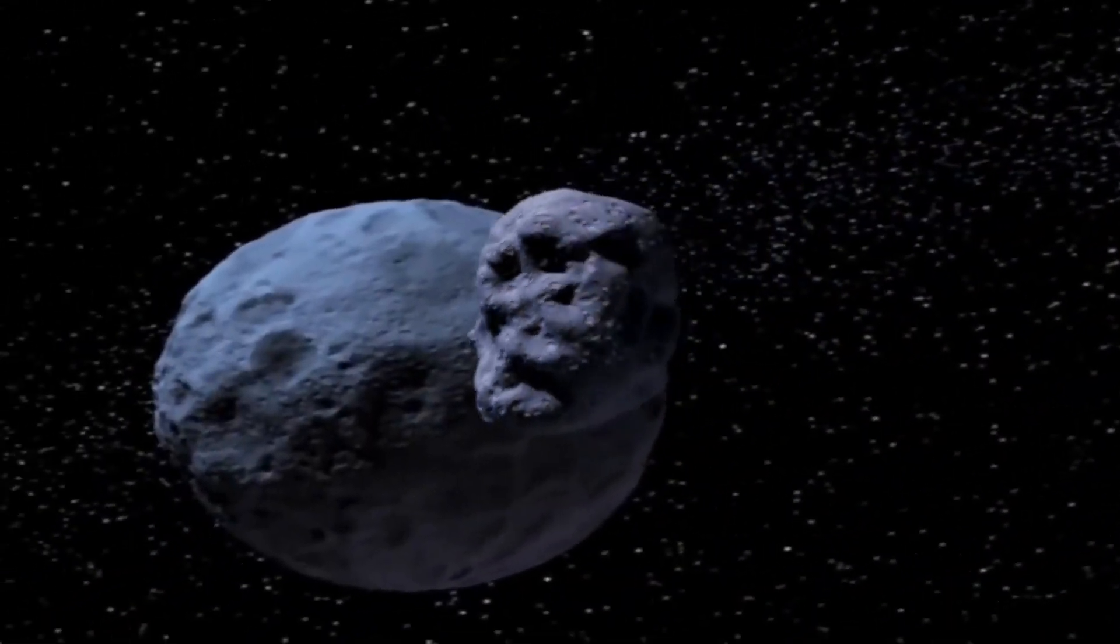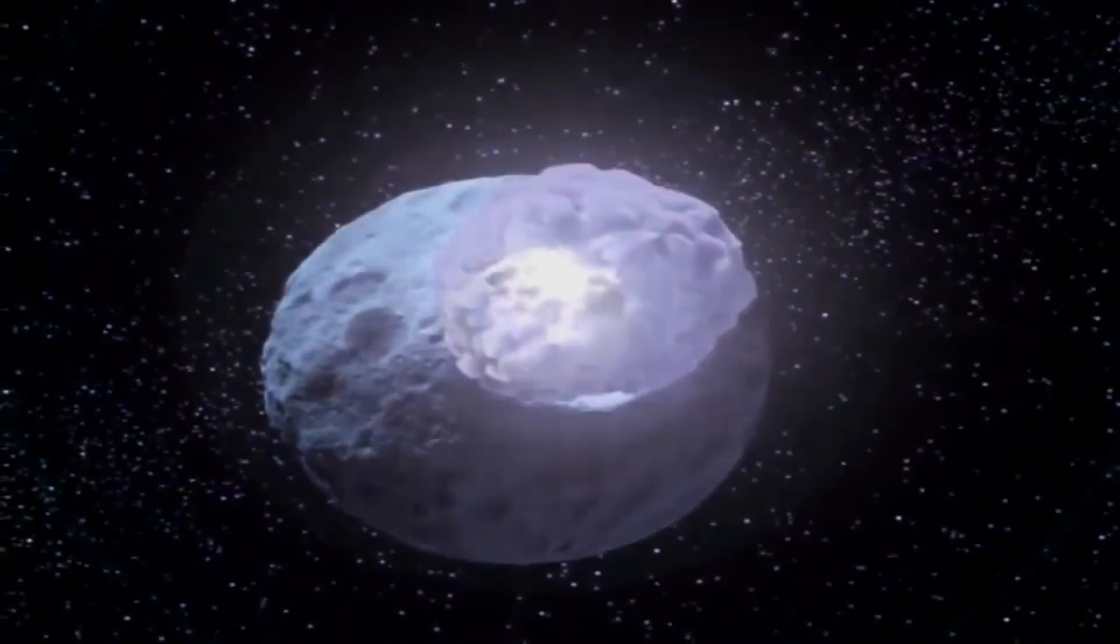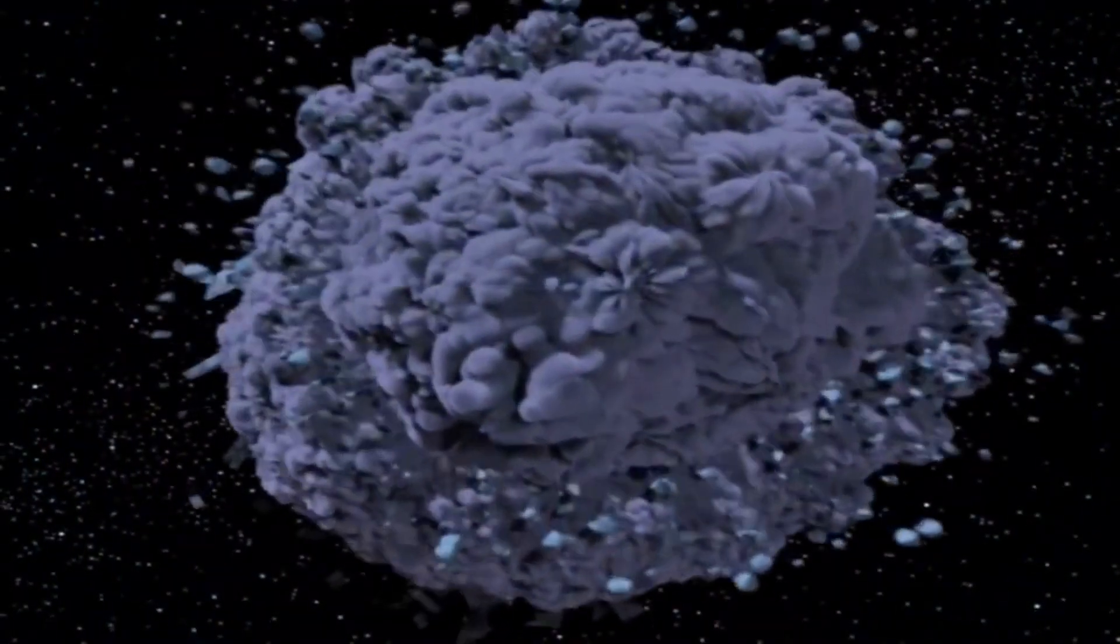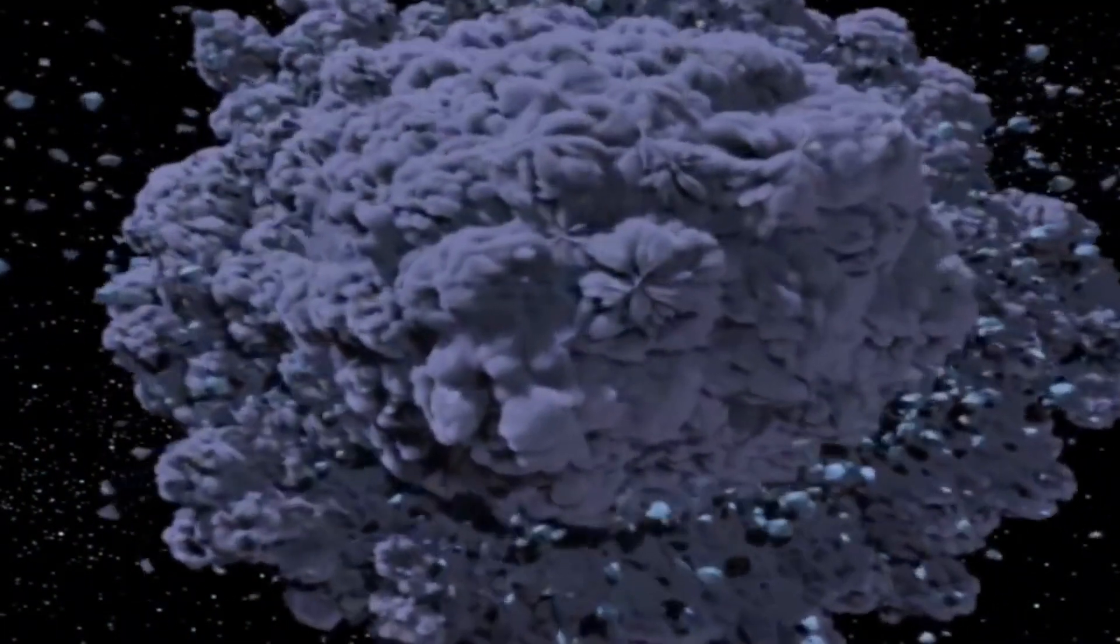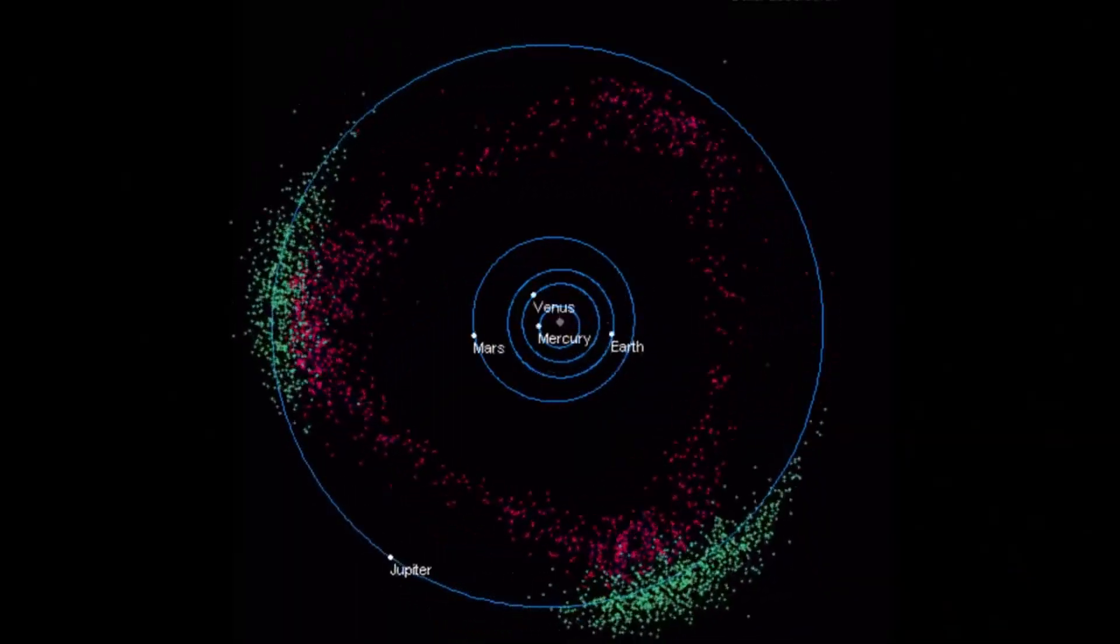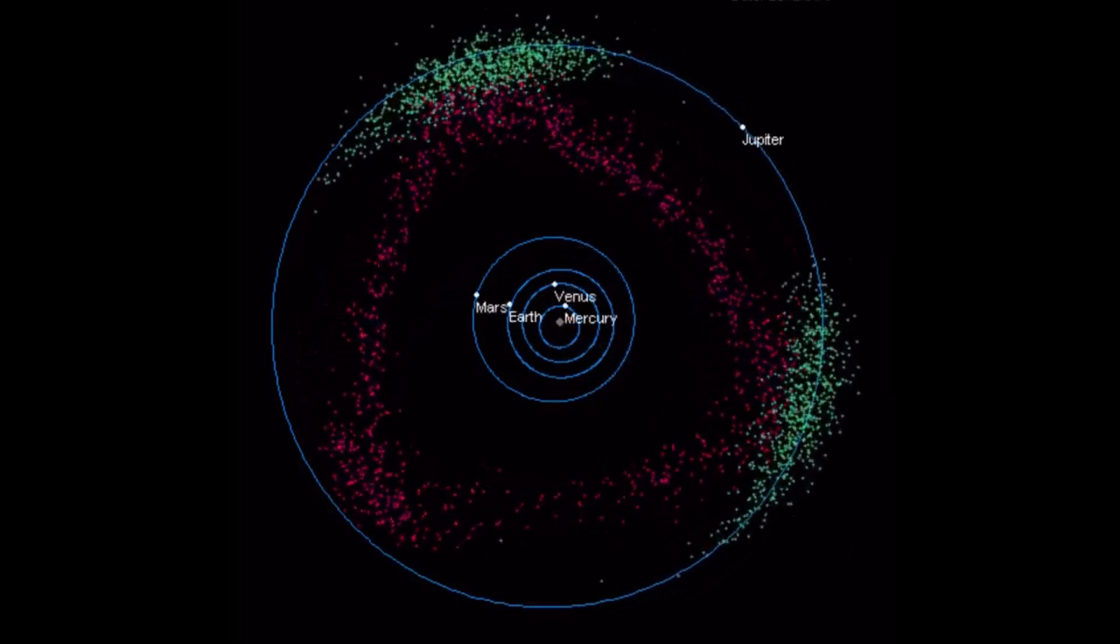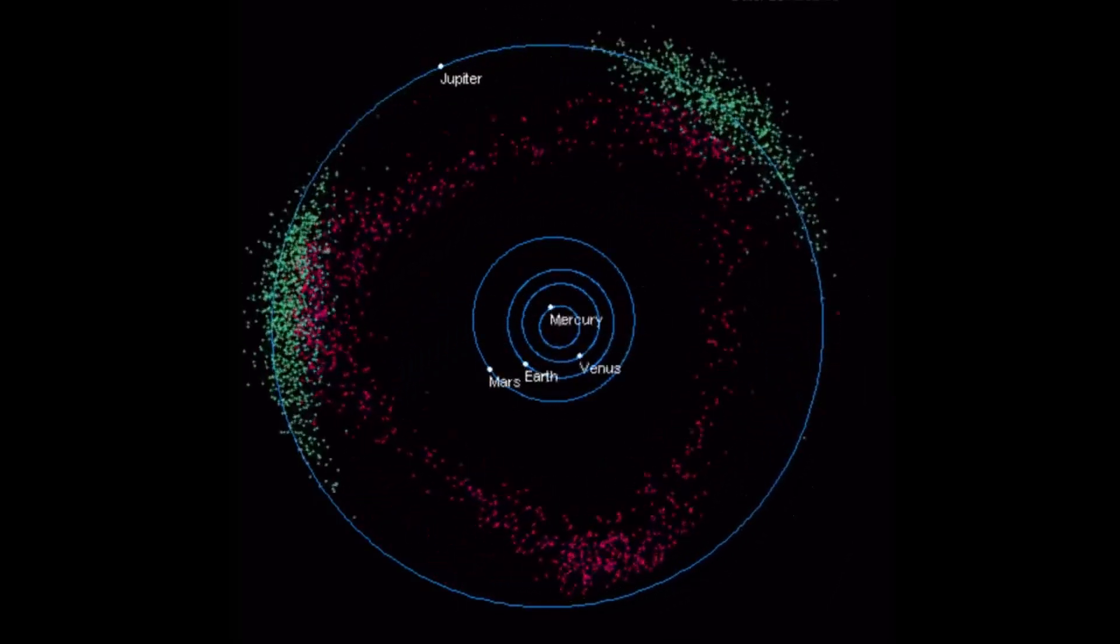This experiment highlights the fragility of our solar system's delicate order and has implications for the ability of planets in other solar systems to host life. Though Jupiter-like planets, gas giants far from their stars, are only found about 10% of the time, their presence could decide whether neighboring Earths or super-Earths have stable orbits.